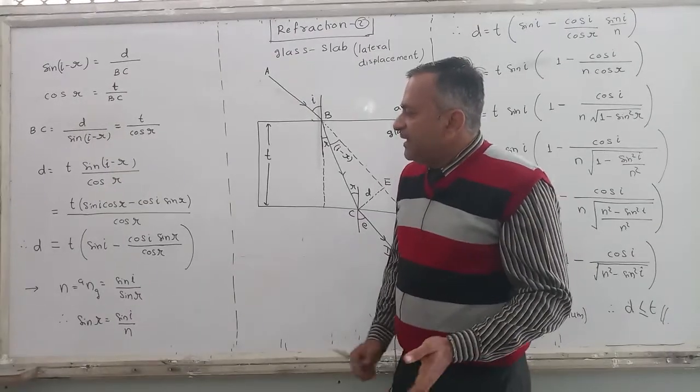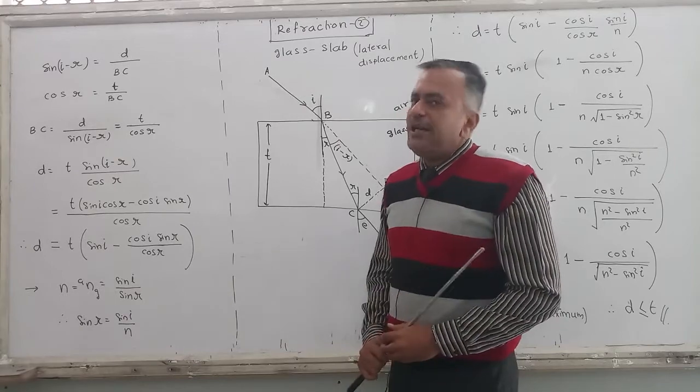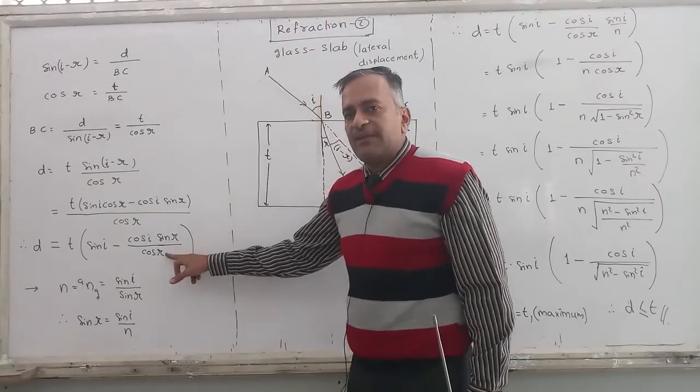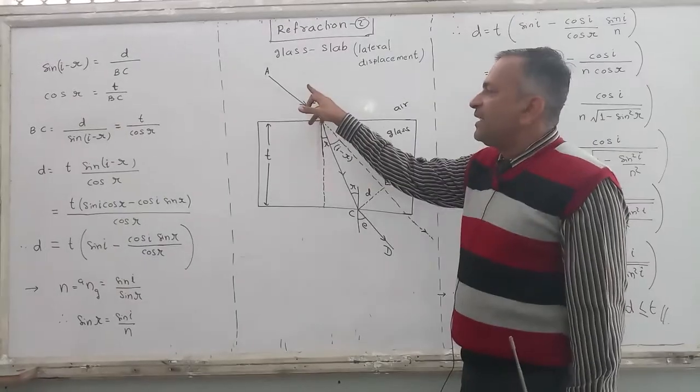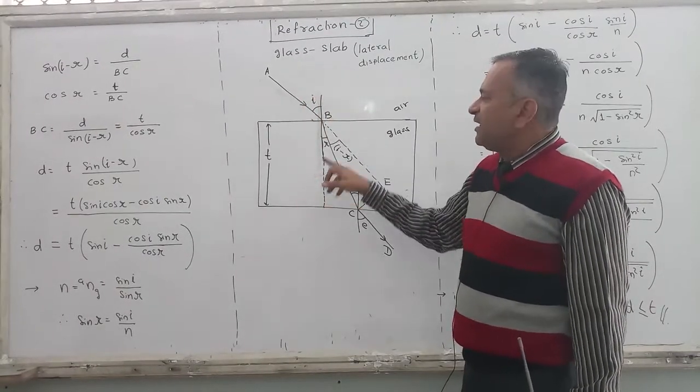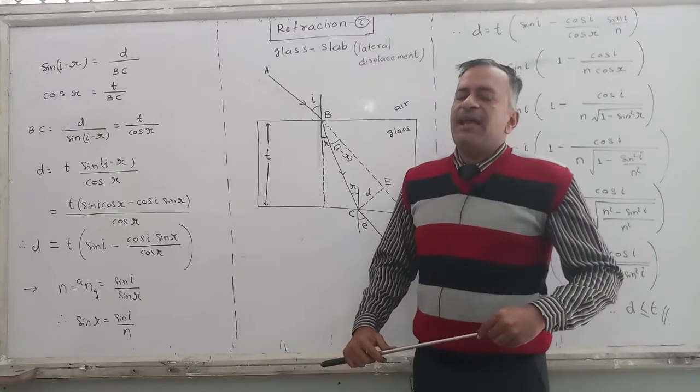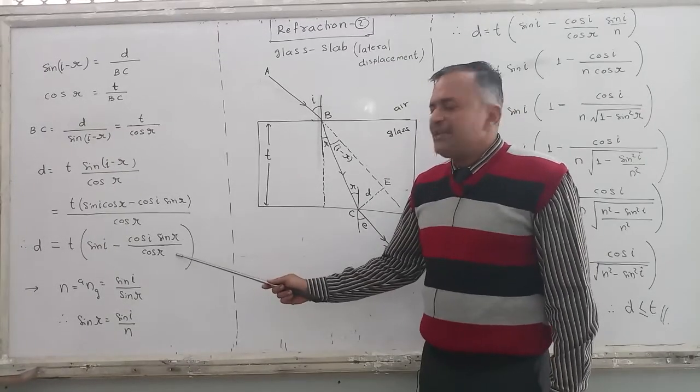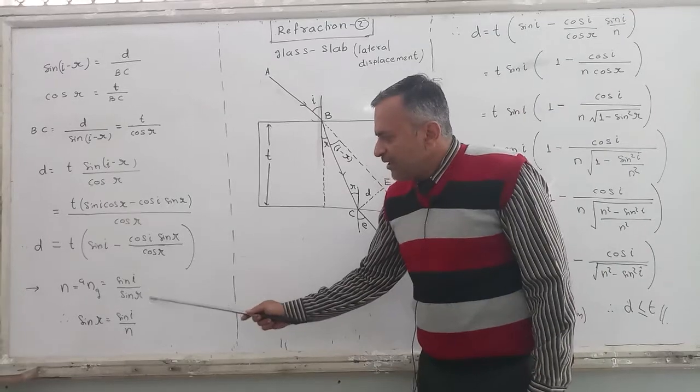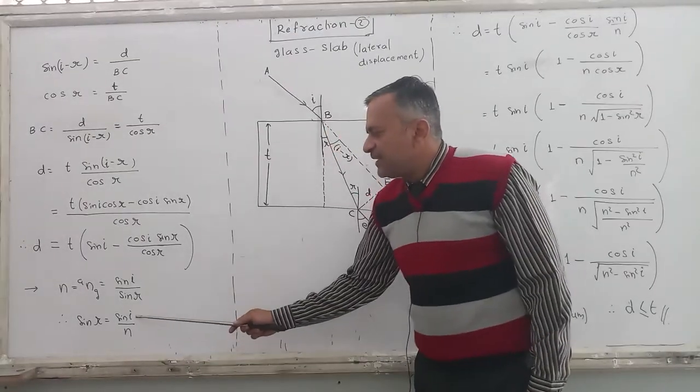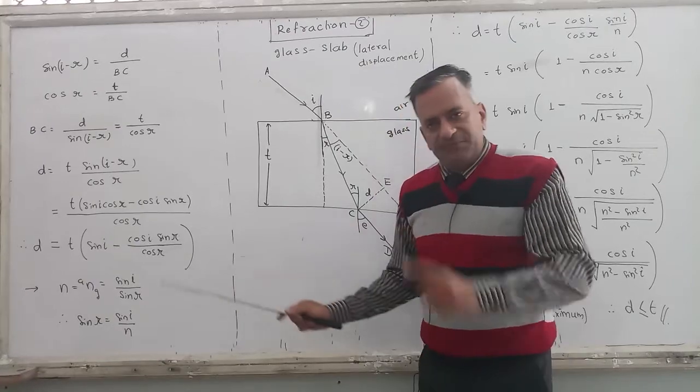Why I am doing this? Because I want to eliminate two things from here: one is sin R and other is cos R. I want to eliminate the angle of refraction because this is glass. I can measure the angles which are in the air. I cannot measure those angles which are in the glass. So from here we have to eliminate sin R and cos R. So how to do that? Using Snell's law, find the value of sin R, which is sin I upon N, and put this value in this equation.